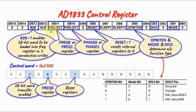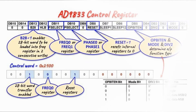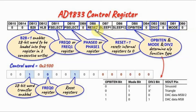The F-select bit determines whether we are writing to frequency register 0 or frequency register 1. P-select determines whether we are writing to phase register 0 or phase register 1. Another bit resets the internal registers to zero. Three bits determine the type of waveform at the output, based on the truth table shown.